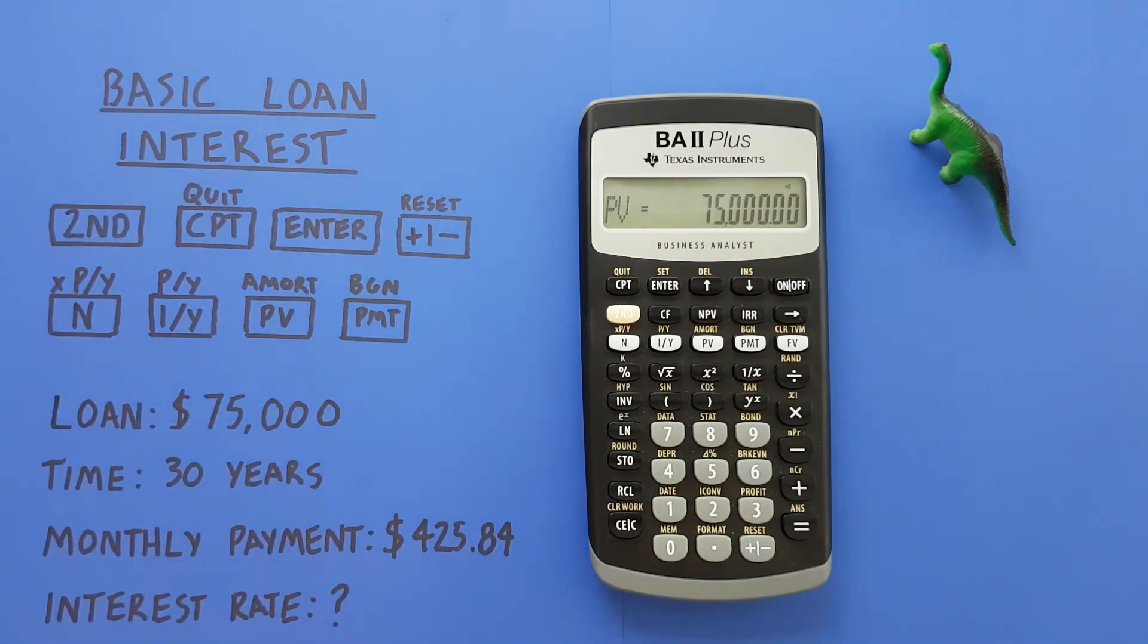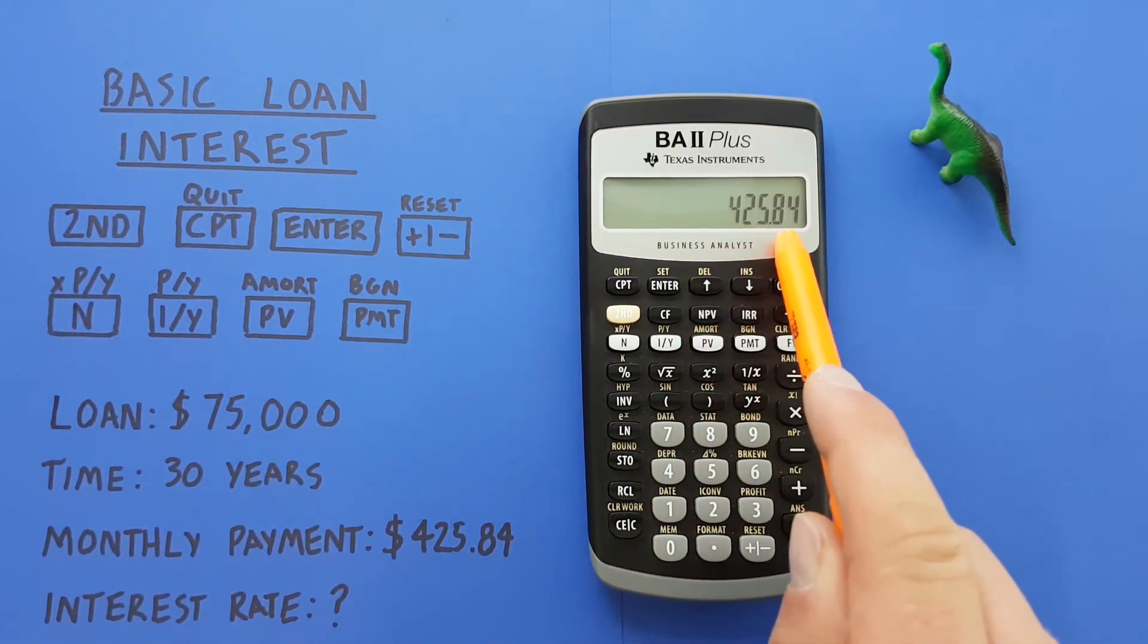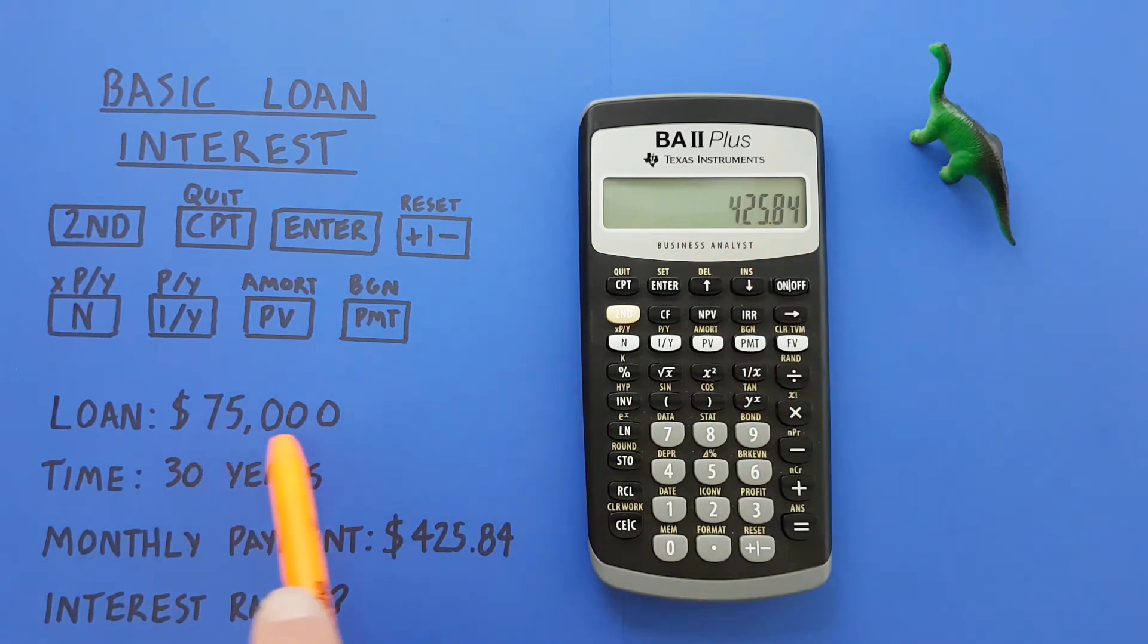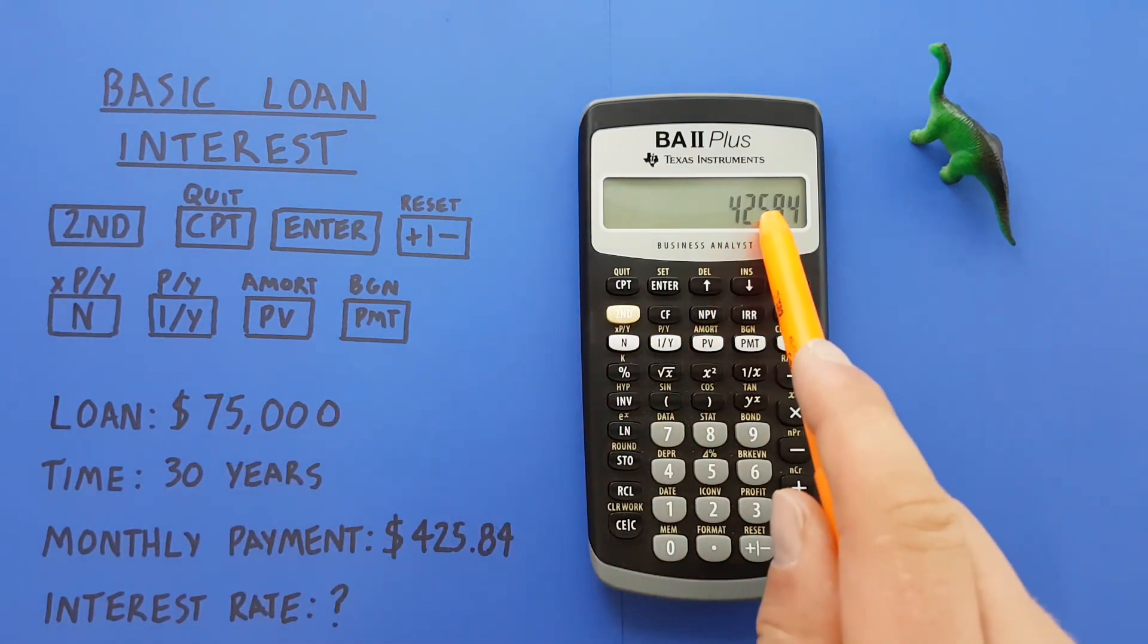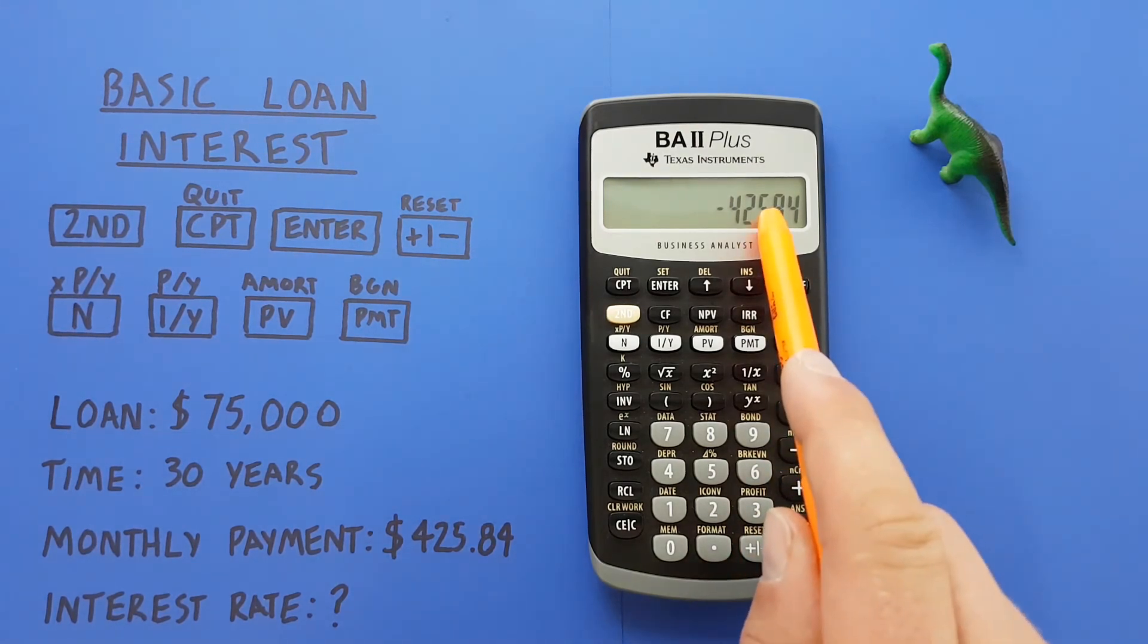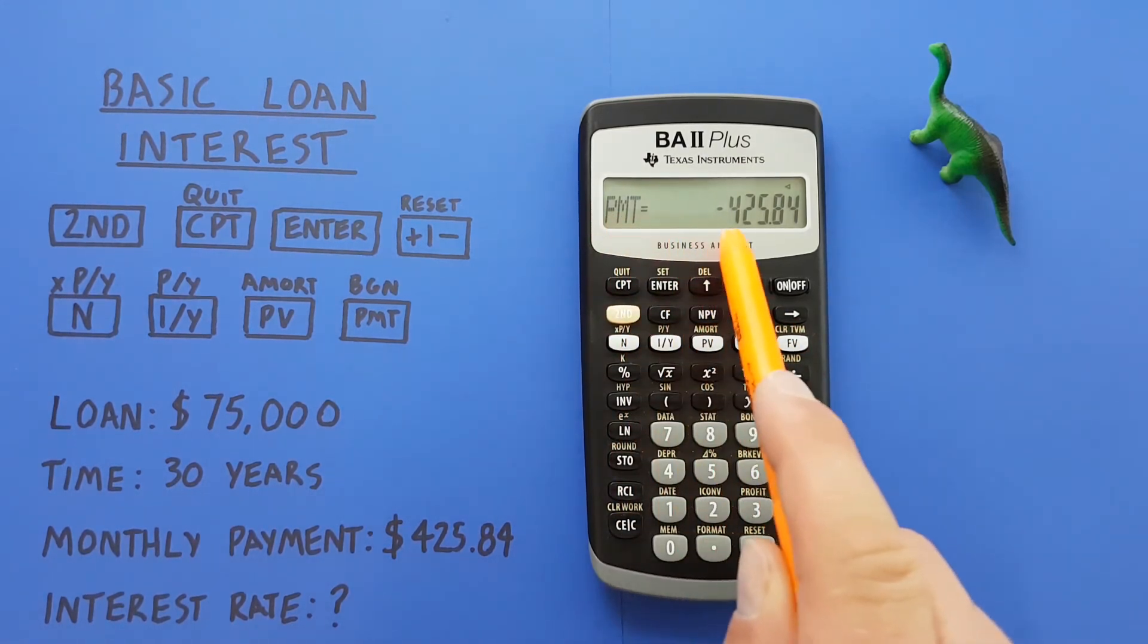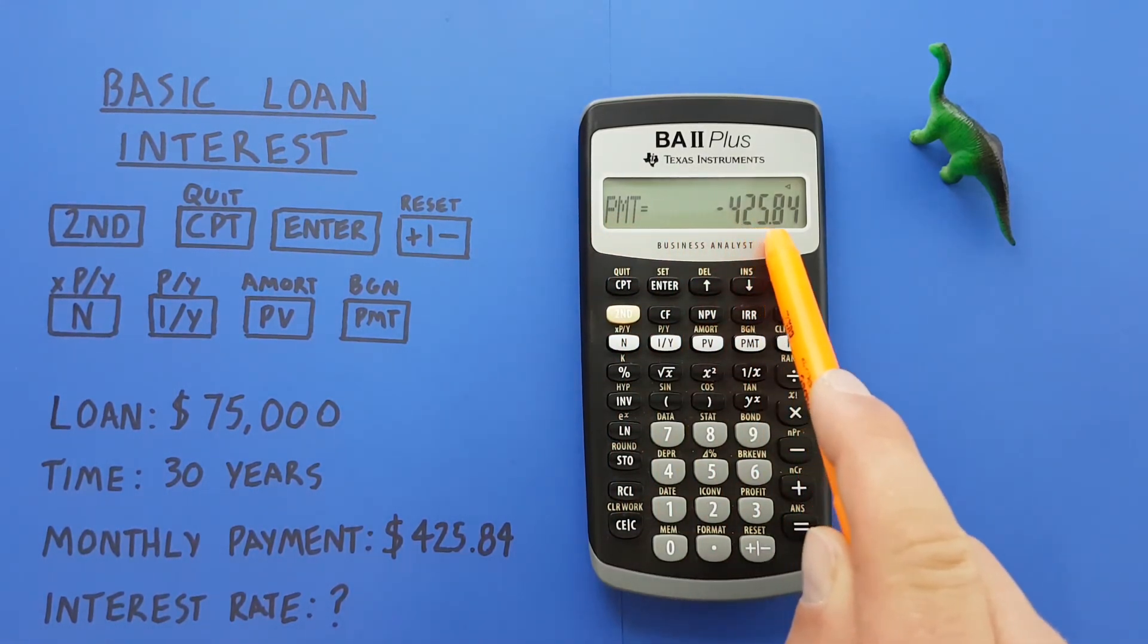Next we enter our payments. We know we have monthly payments of $425.84, so we enter that: 425.84. Now it's important to know that since this is coming off of our present value or total value of 75,000, we want to make this a negative, so we use this positive negative key down here. Then we press the payment key—PMT or payment of $425.84.